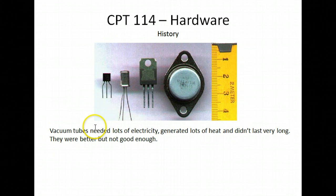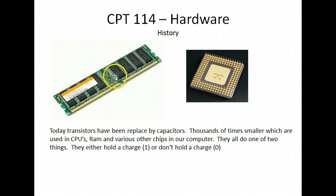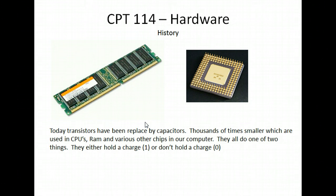The issue was that we couldn't send a car into space, so we needed to make them smaller still. What was developed was capacitors. You can see here random access memory and the central processing unit — everything is still 1s and 0s. We're still holding charges or not holding charges, like we did with vacuum tubes and transistors, except these are very, very tiny capacitors. This allows us to have a million, or now even a billion, different capacitors on a single chip to hold those 1s and 0s.